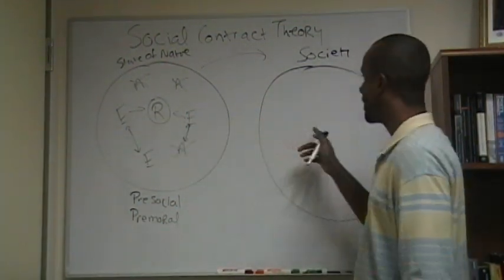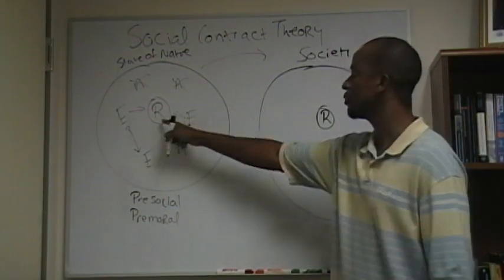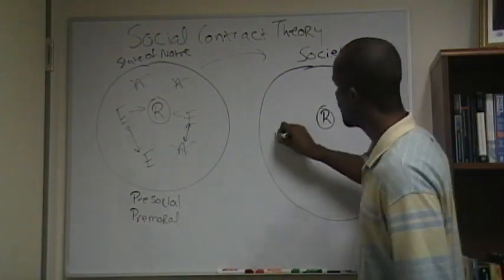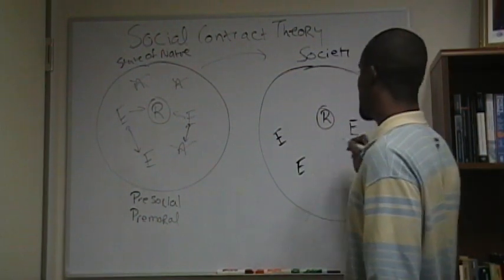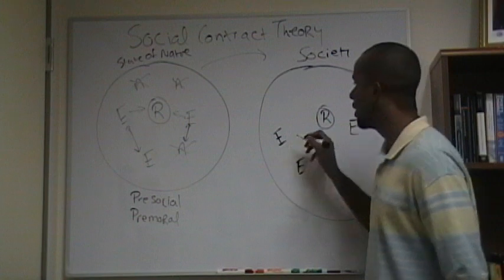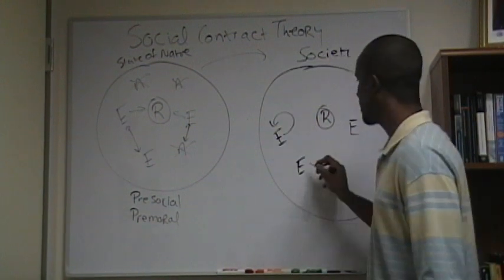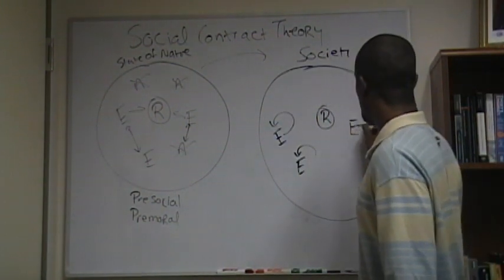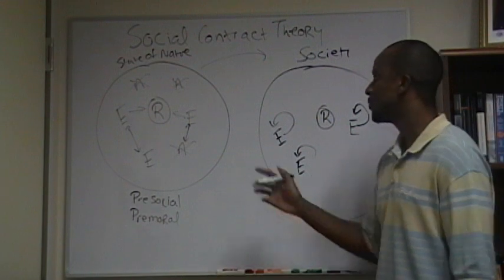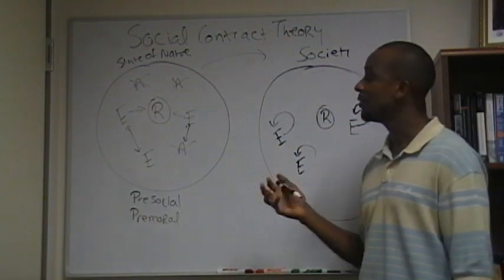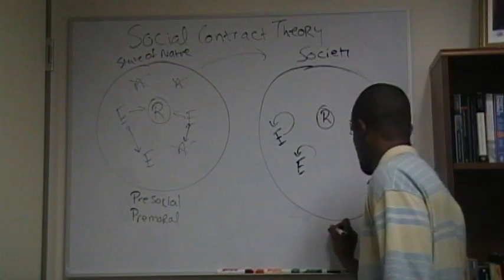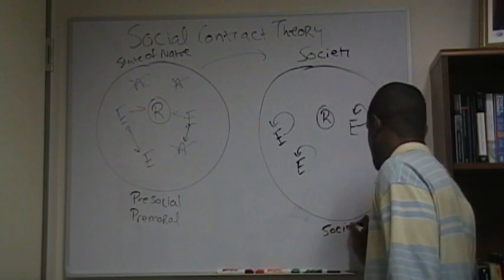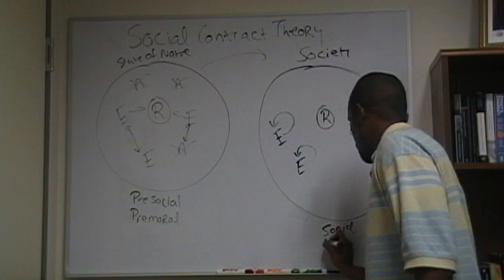What ends up happening in this state is that we still have resources, right? And these resources are still limited. We still have egoists. Specifically, we still have psychological egoists, people who are motivated by self-interest. So all of these egoists are still motivated by self-interest. Nothing really has changed. The significance in the transition from a pre-social to a social, from a pre-moral to a moral.